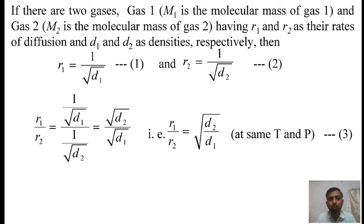According to the statement of Graham's law, the rate of diffusion of gas 1 and gas 2 is expressed by expression number 1 and expression number 2. If we take the ratio of equation 1 and equation 2, we get equation number 3: R1 upon R2 equals square root of D2 upon D1.